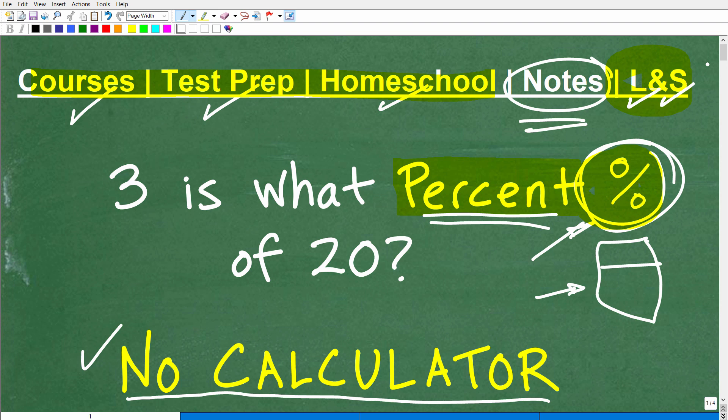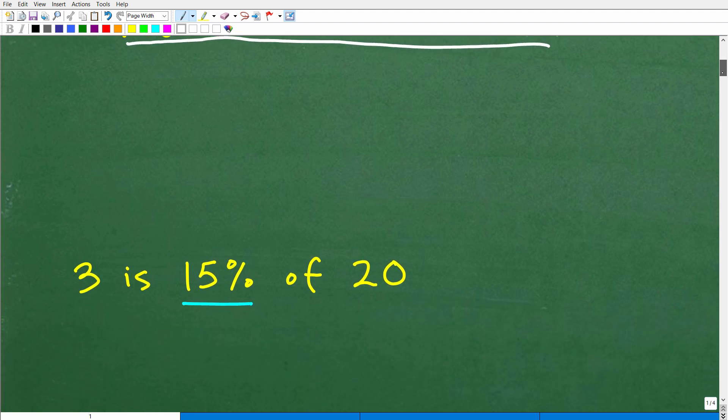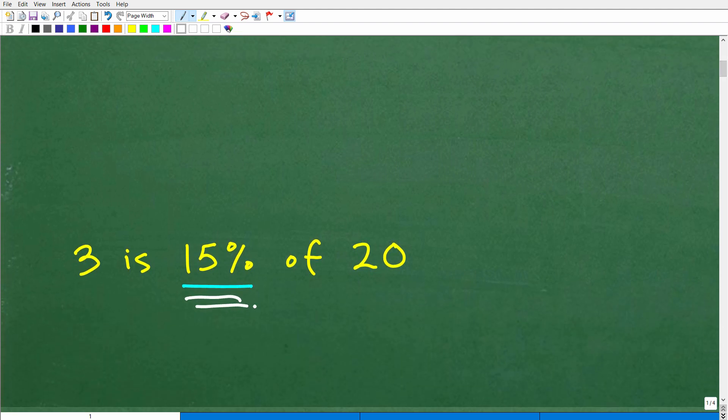Okay, so let's go to figure out what the answer is. And let me show you the correct answer right now. 3 is what percent of 20? Well, 3 is 15% of 20. So 15% is the answer. Okay, so how did you do? Hopefully you didn't use your calculator.